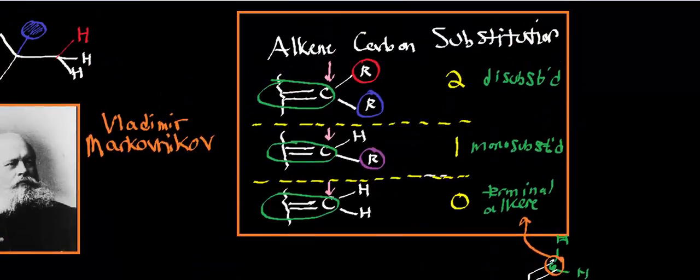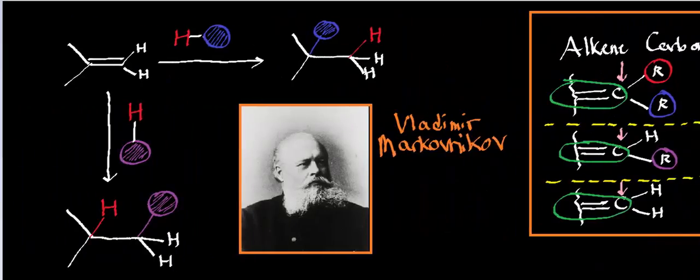But here's the whole point. We need to be able to understand which carbon is more substituted and which one is less substituted in order to understand Markovnikov's rule. So what is Markovnikov's rule? Well, this right here is Vladimir Markovnikov. He's a Russian chemist, and he did a lot of work with addition reactions of alkenes.